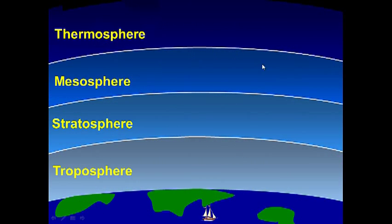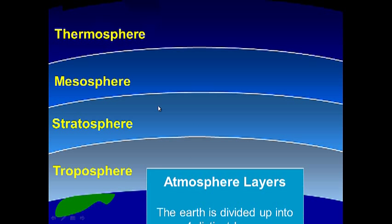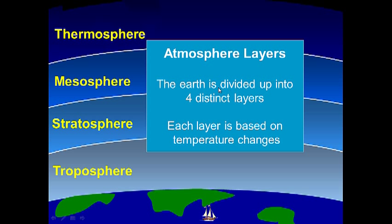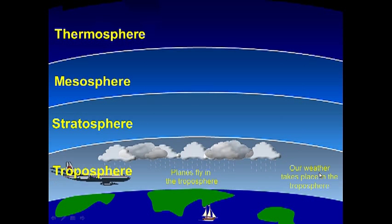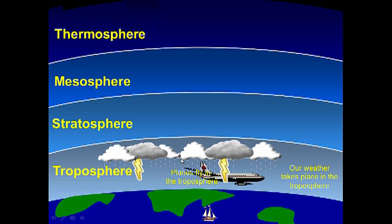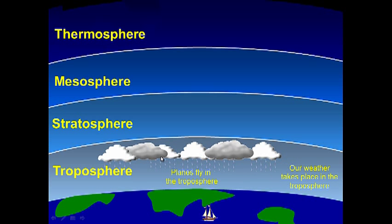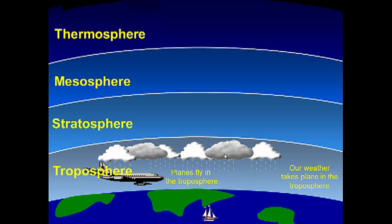Our atmosphere has four layers: the troposphere, stratosphere, mesosphere, and thermosphere. Each layer is based on temperature changes. In the troposphere, planes fly, and our weather takes place. This is because air is the most dense in the troposphere — the thickest air — which gives us our weather: clouds, storms, and wind. All of that takes place in the troposphere. That's where all the action happens.